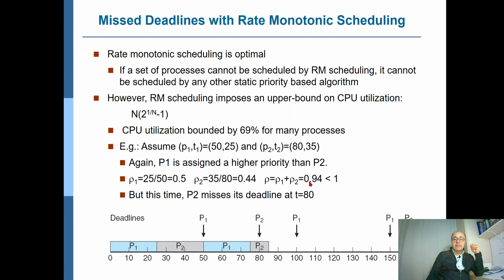So, that is the problem with rate monotonic scheduling. And that's because the overall CPU utilization, although it was still below 100%, with rate monotonic scheduling, we're not able to properly schedule the processes. That's why we have missed a deadline at T equals 80.